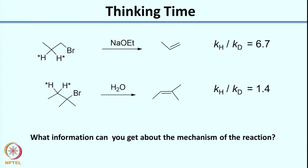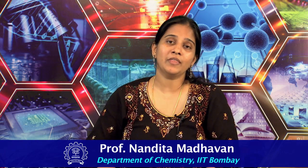Before we end this lecture, I want you to think about two reactions shown on screen, for which the KH/KD values are given. Write the mechanism for each reaction, and then use the KH/KD value to determine whether your proposed mechanism is correct. Thank you, and I will see you in the next lecture where we will discuss more about kinetic isotope effects.